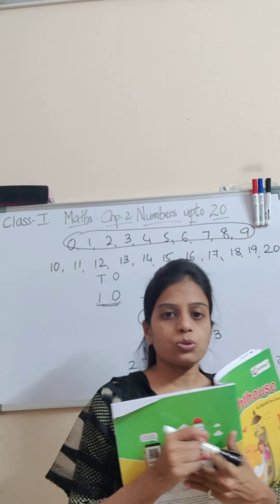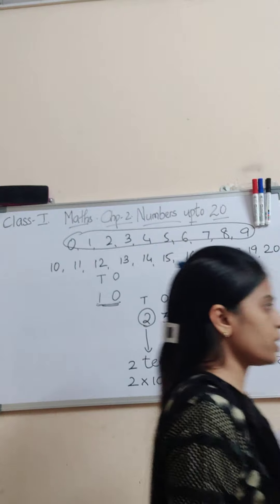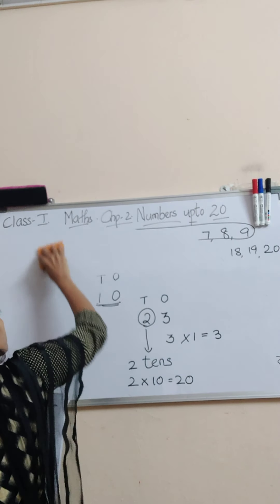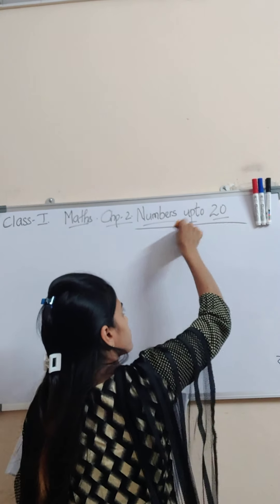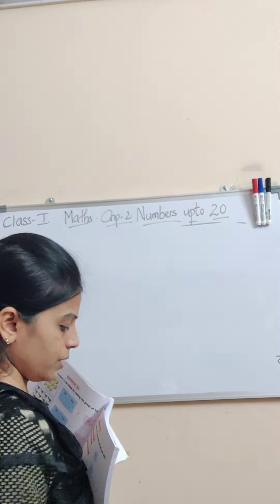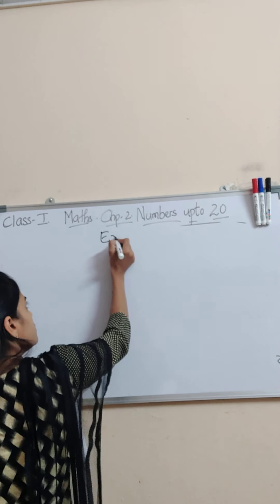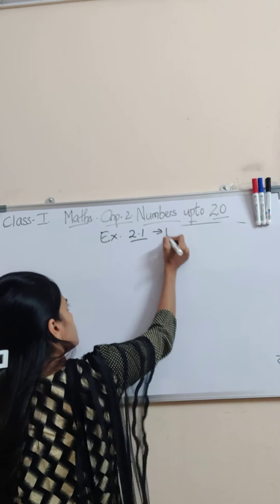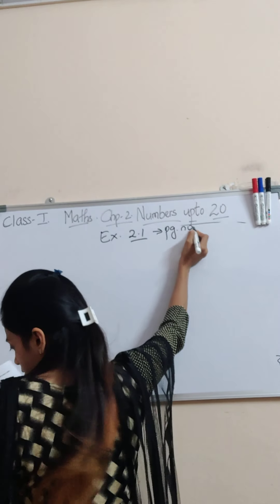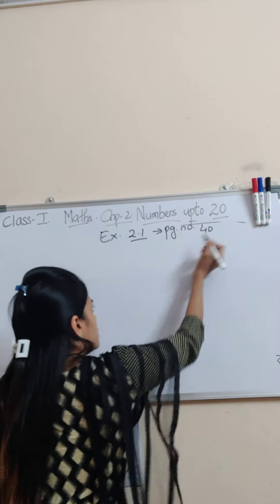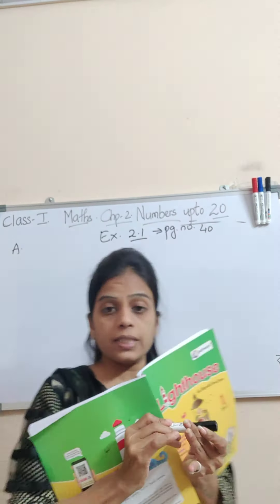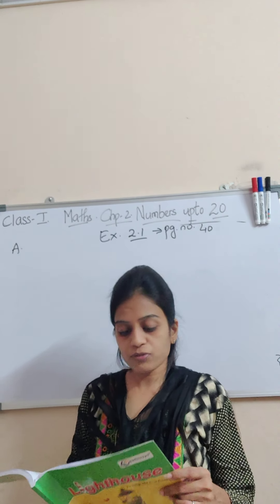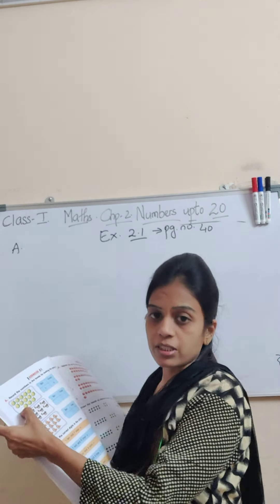Now let us move to the exercises. This is exercise 2.1 on page number 40. Let us begin. Now see students, bit number A: record the numbers in the boxes by making a group of 10. You have been given a few figures.